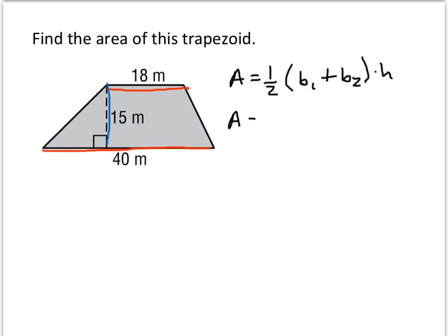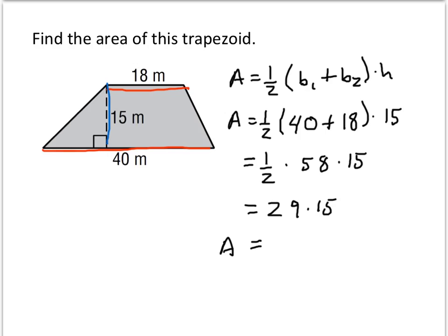Area is 1/2. It doesn't matter the order that you set b1 and b2. Just remember you're adding the two bases: 40 plus 18, times the height, which was 15. 40 plus 18 is 58, and 1/2 of 58 is 29. So we have a final area of 435 square meters.